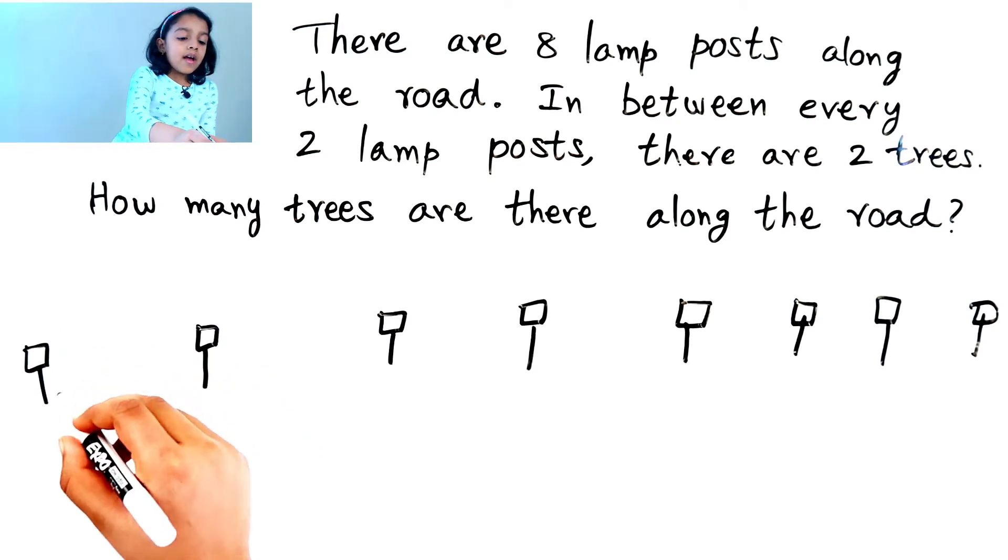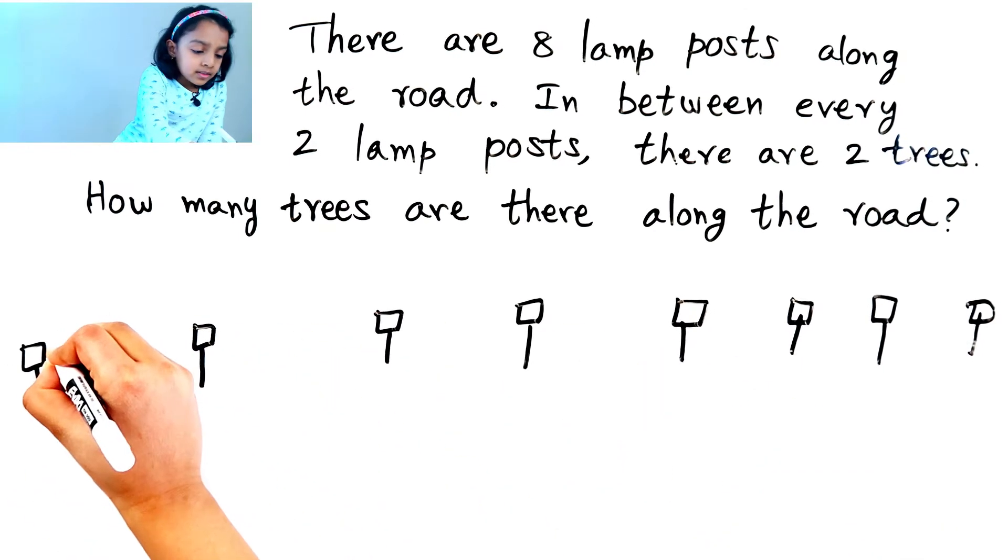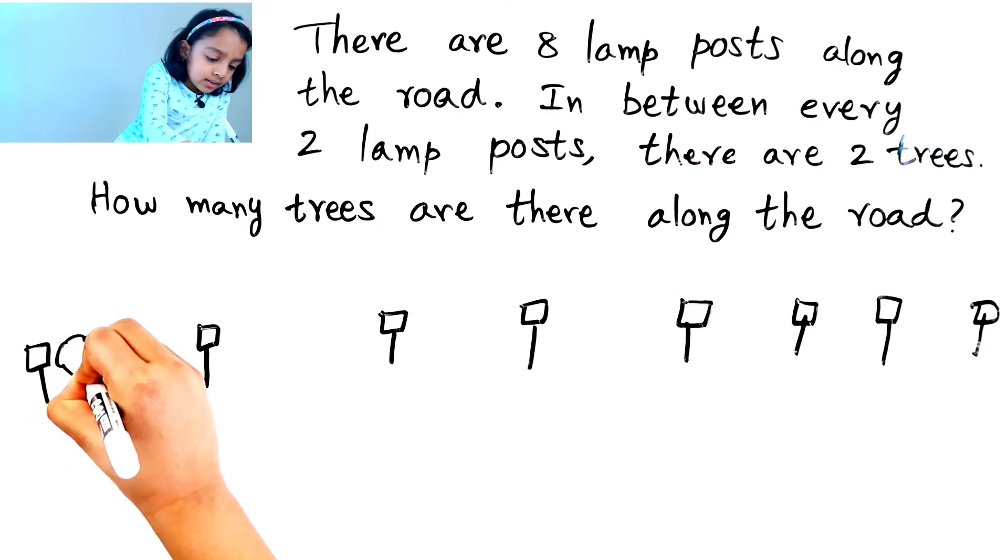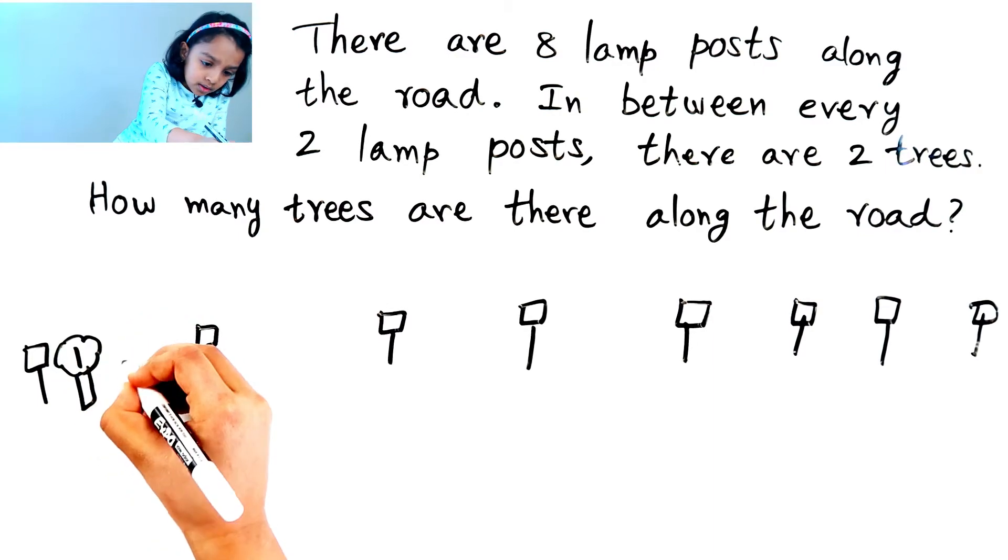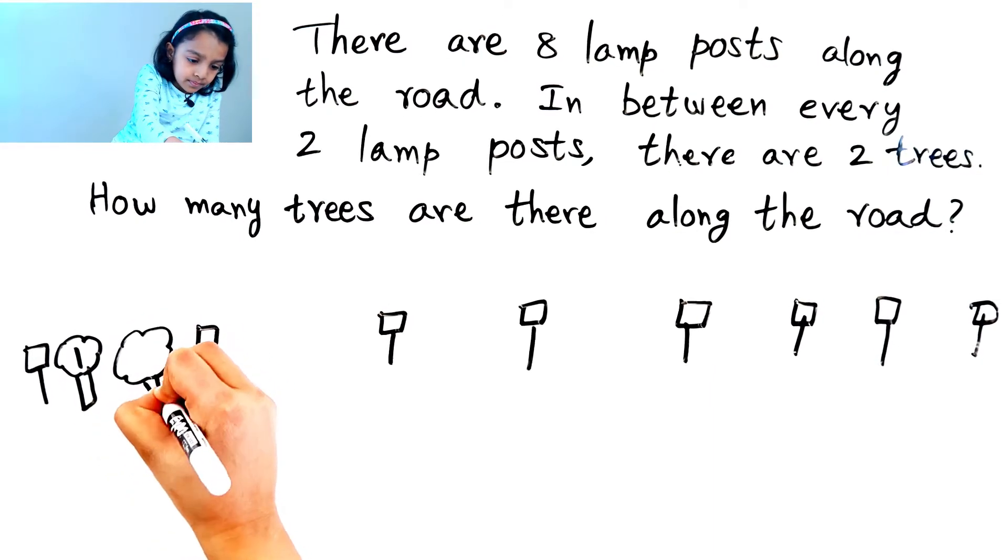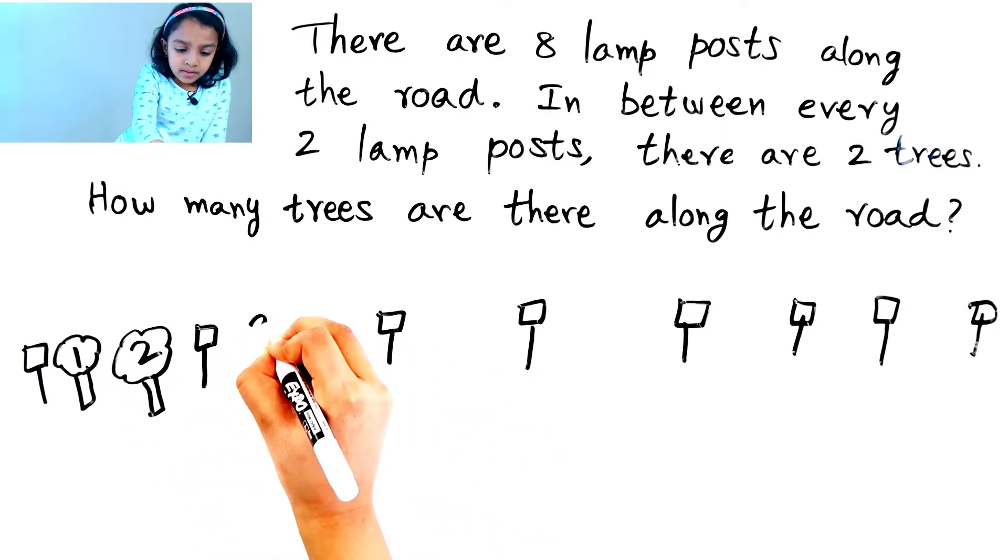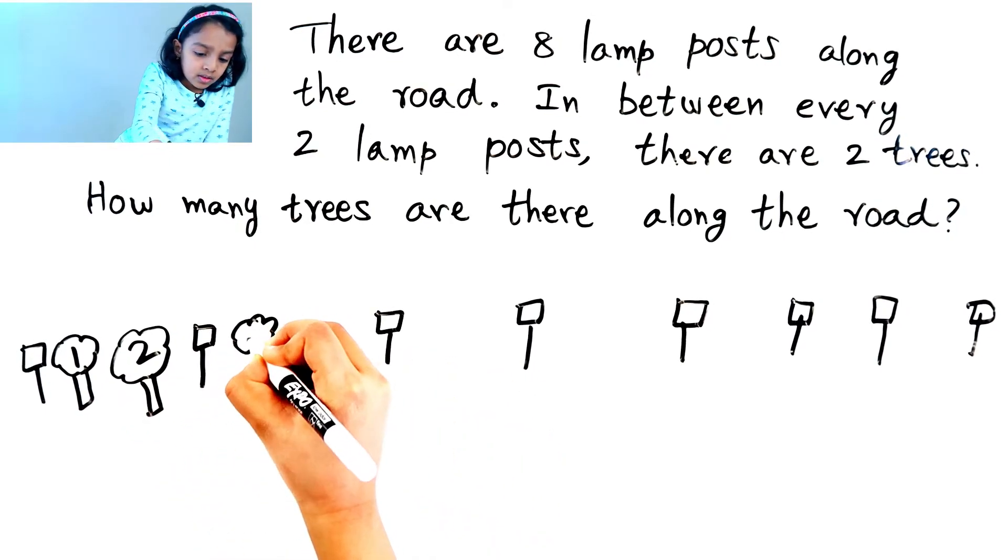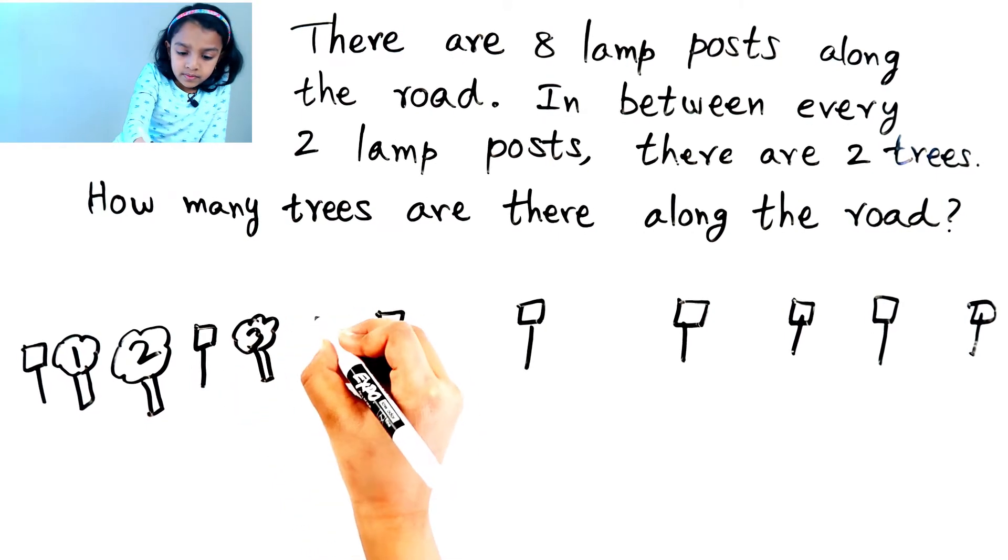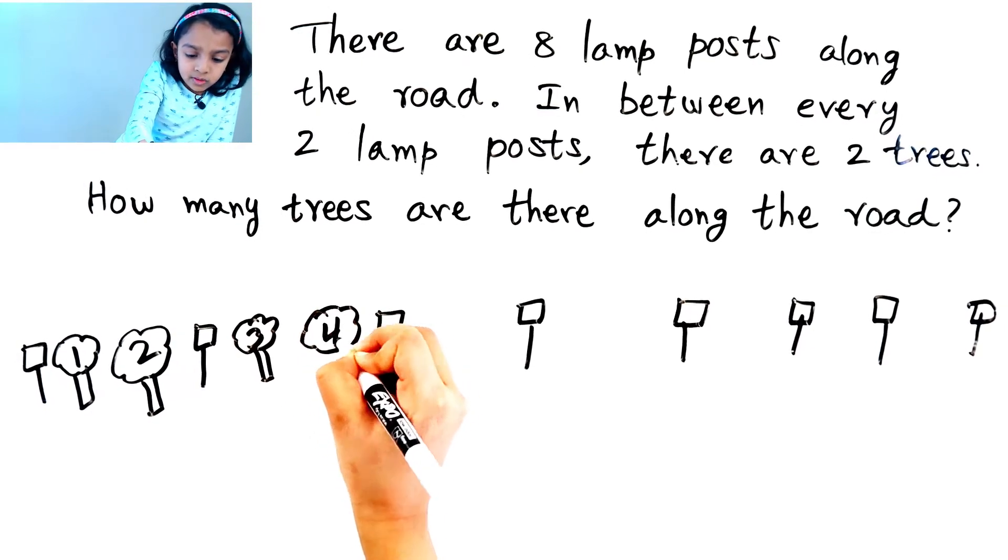Now let's draw two trees between every two lampposts. So one tree, two trees, and then three trees, four trees.